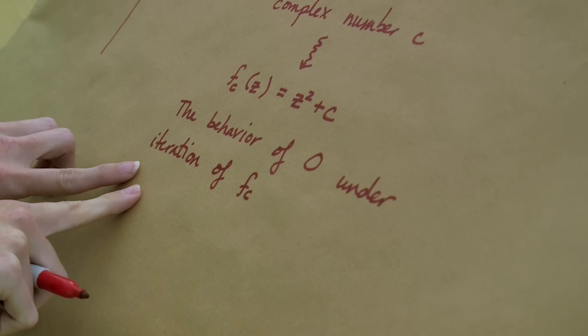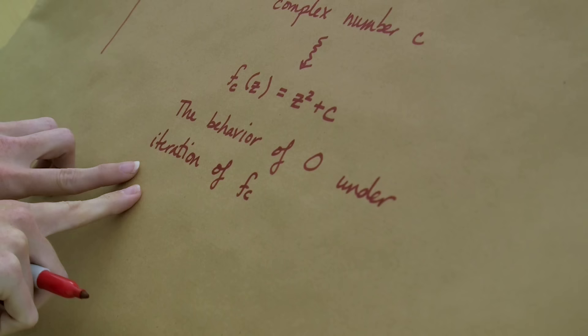What we're interested in is the behavior of zero under iteration. By iteration of FC I mean what happens when I take zero and I plug it into this function and then I keep doing that to the results. For example, if we're looking at F one of z.